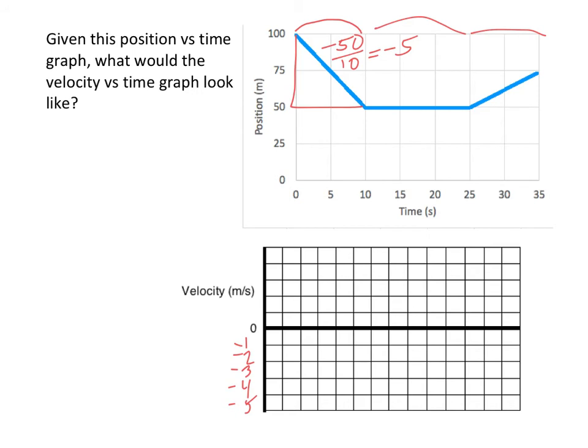Now on this graph, I don't have these labeled, but let's call this 10 seconds. And so for 10 seconds, it's got a velocity of negative 5. Then over this region, it has stopped moving. Its position is constant at 50 meters, and it does not change. Its slope is 0, so its velocity is 0, and it does that until it hits 25 seconds.